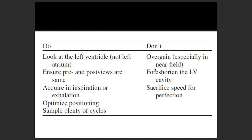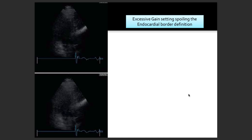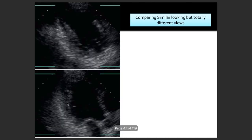Do not use over-gain, especially in the near field, as it will cause problems for image quality. Don't foreshorten the LV cavity, and for the sake of speed, don't forget quality. Using excessive gain settings spoils the endocardial border definition, making it difficult to notice where the endocardial border is. The correct gain setting allows clear visualization of the endocardial border.